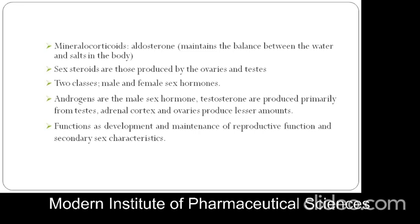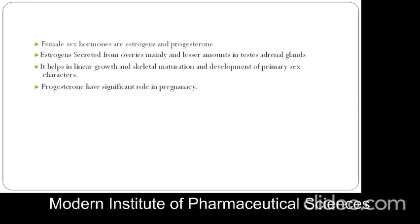Sex steroids are produced by the ovaries and testes and are mainly involved in development of the reproductive systems. There are two classes: male and female sex hormones. Androgens are male sex hormones; testosterone is produced primarily from the testes and is important for production and maintenance of male reproductive parts and secondary sex characters. Female sex hormones are estrogens and progesterone. Estrogens are secreted from the ovaries and lesser amounts from the testes and adrenal glands, helping in linear growth, skeletal maturation, and development of primary sex characters. Progesterone has a significant role in pregnancy.